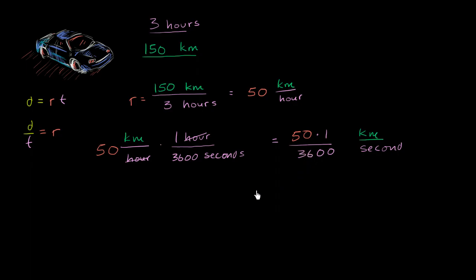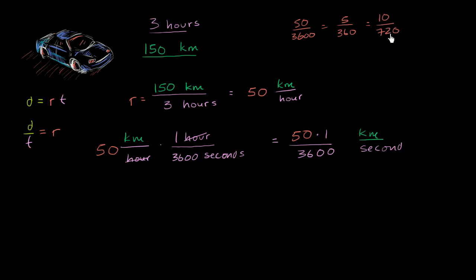So this is 50 over 3,600, which fits our intuition — in one second you go 1/3,600th as far as in an hour. Simplifying: 50 over 3,600 equals 5 over 360, which equals 1 over 72. So this is equal to 1/72nd of a kilometer per second.